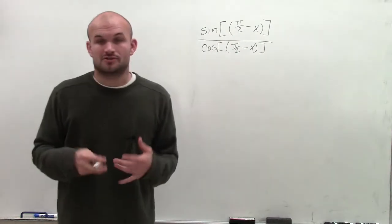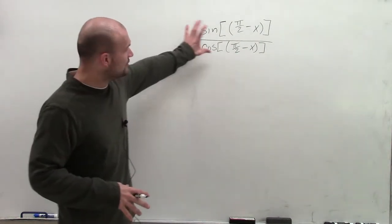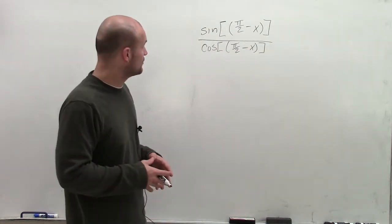So what identities am I going to use? We've talked about some reciprocal, quotient, Pythagorean identities. Well, in looking at these problems, we've talked about this previously—the co-function identity. And that's exactly the identity we're going to want to use.